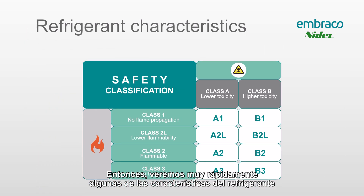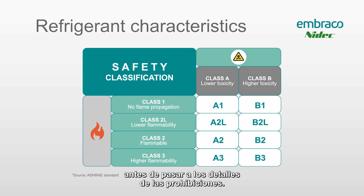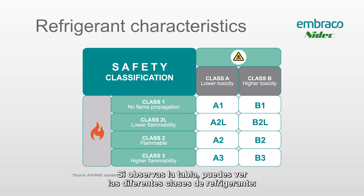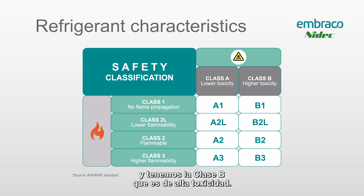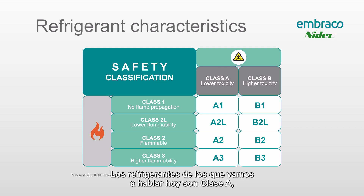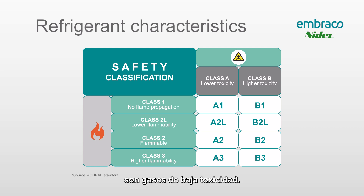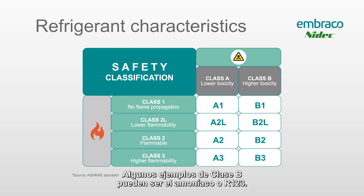We'll look at some refrigerant characteristics before we jump into the specifics of the bans. If you look at the chart, you can see the different classes of refrigerant — Class A and Class B. Class A is low toxicity and Class B is high toxicity. The refrigerants we'll be talking about today are Class A — they are low toxicity gases. Some Class B examples might be ammonia or R123.